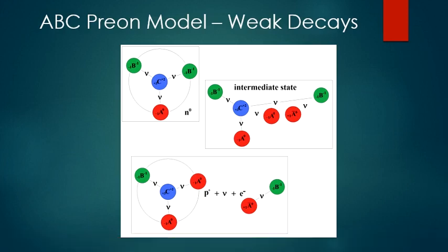Here we see the process of beta decay as described by the ABC prion model. A neutron is made up of a central C particle, as well as two B particles and an A particle. Neutrinos are proposed as the binding quanta that hold the prions together. In a quantum tunneling event, a B tunnels out and virtually escapes from the neutron. In that intermediate state, an A-anti-A pair is formed as well as a pair of neutrinos. The A then combines with the neutron remnant to form a proton, while the anti-A and a neutrino combine with a B to form the electron and a free neutrino remains.